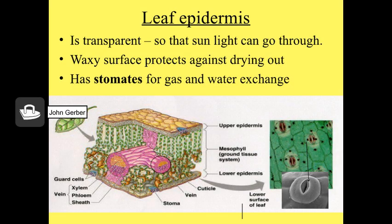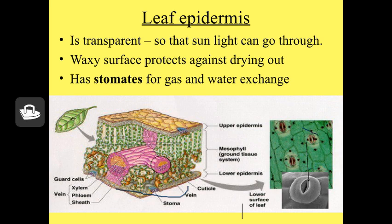The top layer of epidermis needs to be transparent to let light flow through, because the working part of the plant where photosynthesis happens is the palisade cells, which need light for photosynthesis. The cuticle formed on the top of the leaf is a waxy surface to prevent water loss. It also exists on the bottom of the leaf, and the bottom of the leaf has lots of stomates, as you can see in this picture.